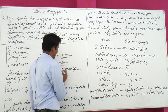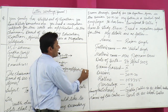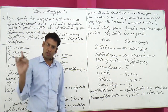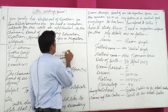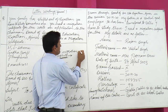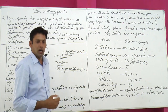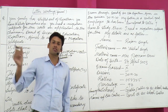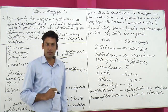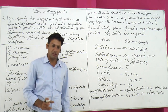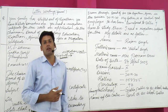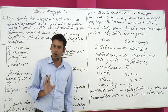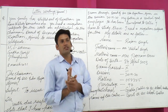A Transfer Certificate (TC) is issued by one school when a student moves to another school within the same board. A Migration Certificate, however, is needed when you have to change your board — for example, if you are under Rajasthan Board and want to study under Delhi Board, Maharashtra Board, Gujarat Board, UP Board, or any other state board. If you are under a central board like CBSE which exists in Rajasthan and elsewhere, you do not need a migration certificate.